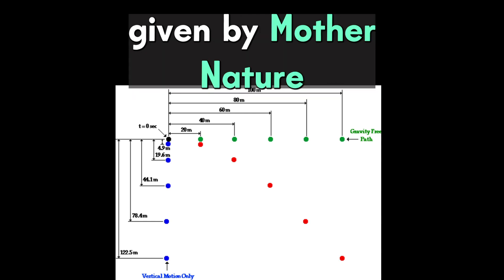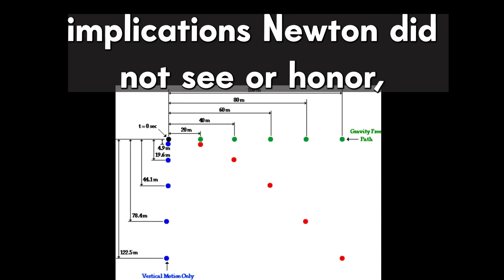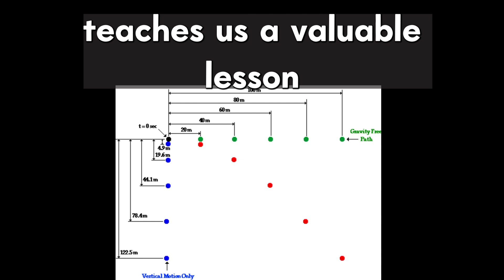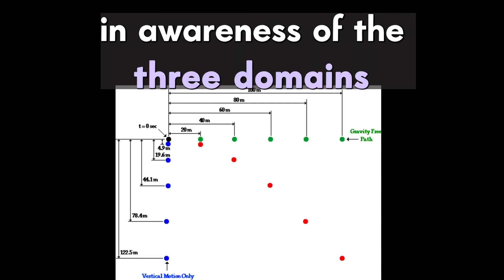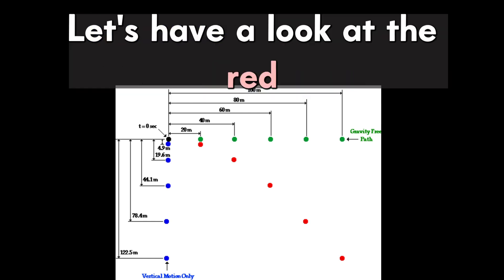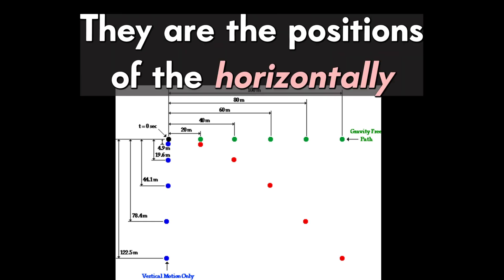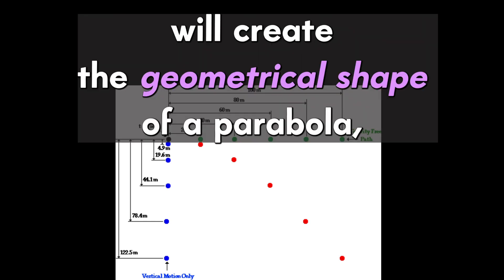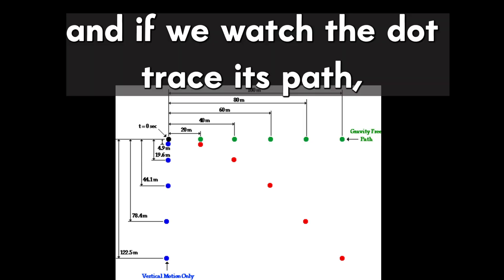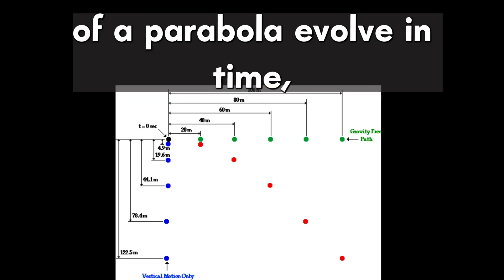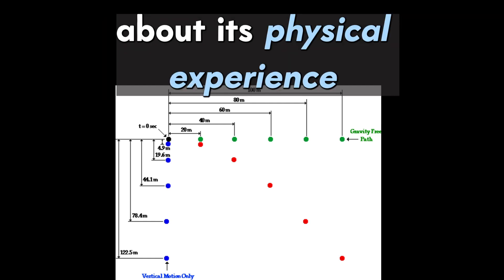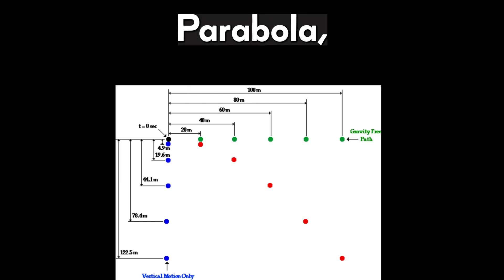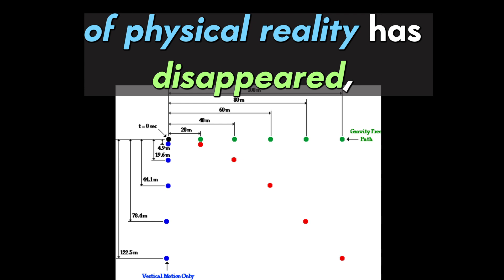This seemingly simple and straightforward answer given by Mother Nature has monumental implications — implications Newton did not see or honor because he was a theoretician at heart. But this simple answer also teaches us a valuable lesson in how we should talk about reality in awareness of the three domains: geometry, kinematics, and dynamics. Let's have a look at the red dots in the diagram — they are the positions of the horizontally moving, vertically falling body over time. We can all agree that the red dots connected will create the geometrical shape of a parabola, and if we watched the dots trace its path, we would see the kinematic path of a parabola evolve in time. But what answer would we get if we were to ask the body about its physical experience during the trajectory? This is the fulcrum, the crux of the matter — we would not get the answer parabola.